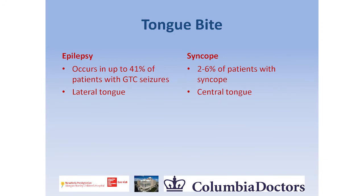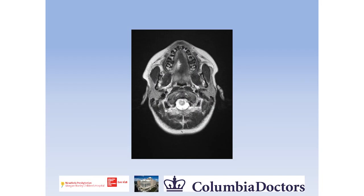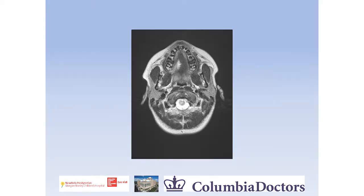Tongue biting: people who faint can bite their tongues, as can people with seizures. Interestingly, if you bite the tip of your tongue it is more likely to go along with a syncopal event, whereas biting the side of the tongue is more likely to go along with an epileptic event. On MRI of the brain, you can see lateralized tongue bite evidence consistent with an epileptic seizure.